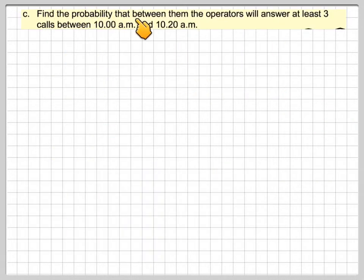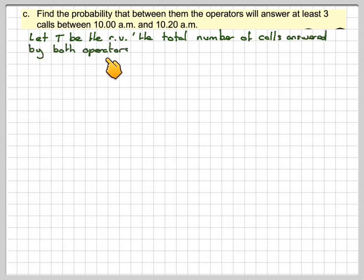Now we have to find the probability that between them the operators will answer at least 3 calls between 10 am and 10:20 am. Let T be the random variable of the total number of calls answered by both operators A and B in 20 minutes.